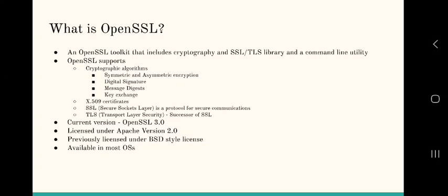What is OpenSSL used for? It is a library and a command-line utility which can be used for various different things, like supporting cryptographic algorithms, certificates — specifically X.509 certificates — and it supports Secure Socket Layer, which is a protocol for secure communication, very much deprecated since 2015. In cryptographic algorithms, you'd have come across terms like symmetric and asymmetric encryption, digital signatures, message digest, and key exchange algorithms.